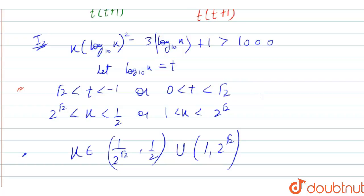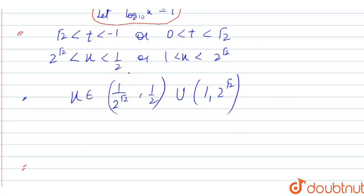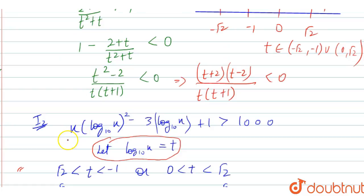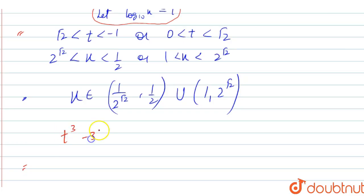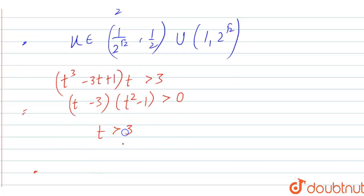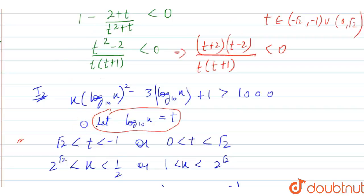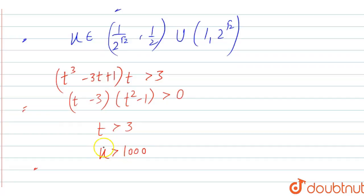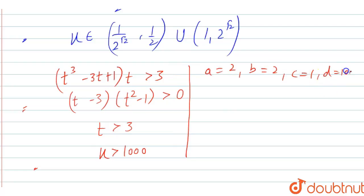Now completing I2 in terms of t since we took log₁₀x = t. It becomes t³ − 3t + 1 · t greater than 3. After simplification: t(t² − 3t − 1) greater than 0, meaning t should be greater than 3. Putting this back, x is greater than 1000. So the values are: a = 2, b = 2, c = 1, and d = 1000.